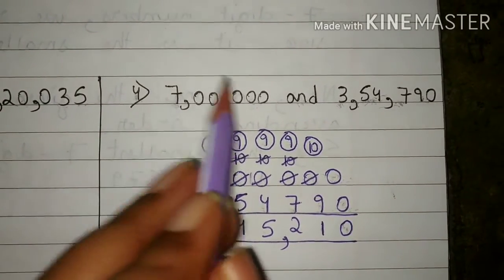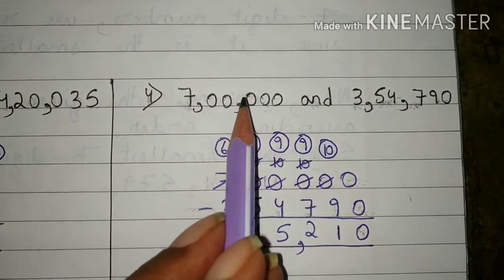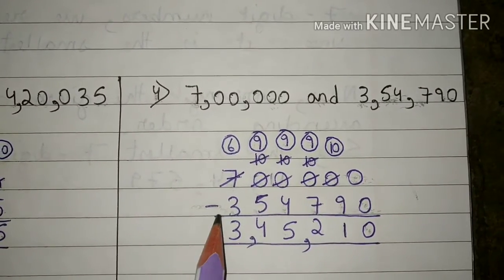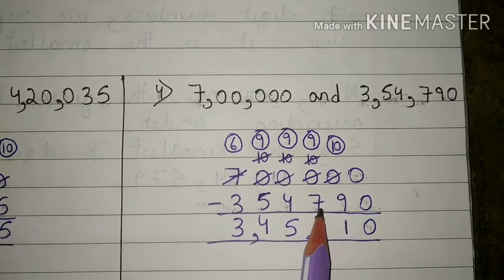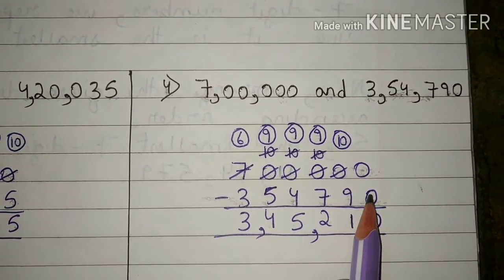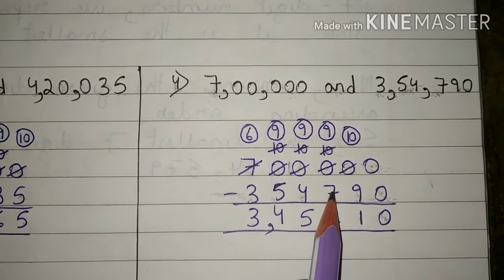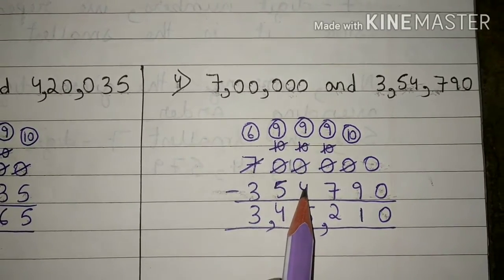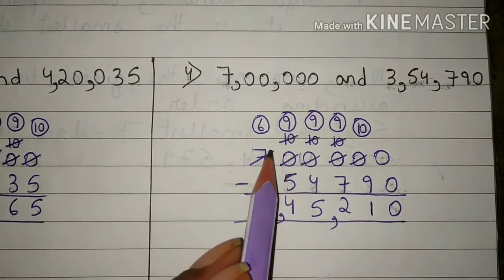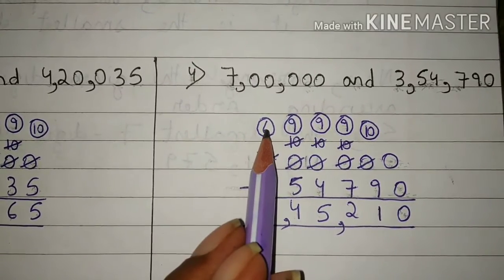Fourth question: 7,00,000 and 3,54,790. First we will arrange these numbers in proper columns. We will write 7,00,000 here and 3,54,790 here. Now we will subtract the numbers. Zero minus zero is zero. Zero is smaller than nine, zero is smaller than seven, zero is smaller than four, zero is smaller than five. So we will borrow one number from seven to this zero. Now this zero will become ten and seven will become six.